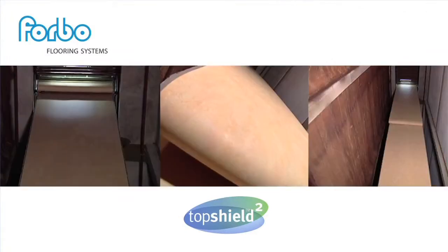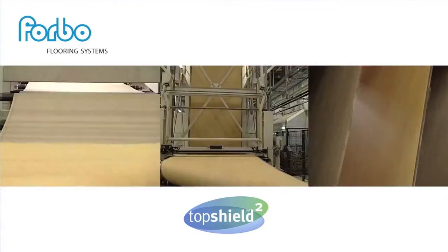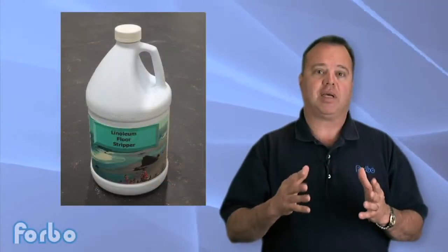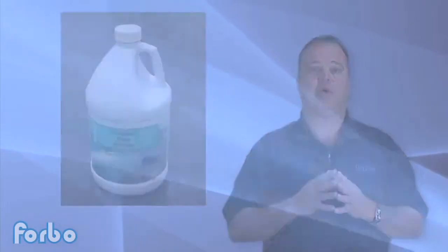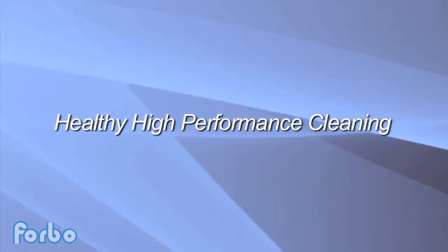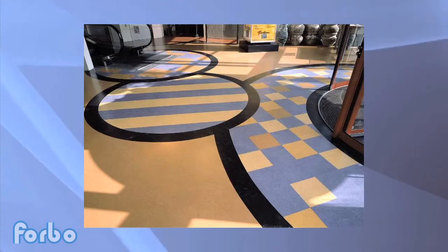Top Shield II eliminates the need for initial finish when the floor is installed. It lowers the cleaning and maintenance costs because you don't have to use chemicals like strippers. We call this healthy high-performance cleaning because it benefits the occupants just as much as the floors. Top Shield II gives your floors a better long-term appearance and reduces the chemical footprint on the environment.